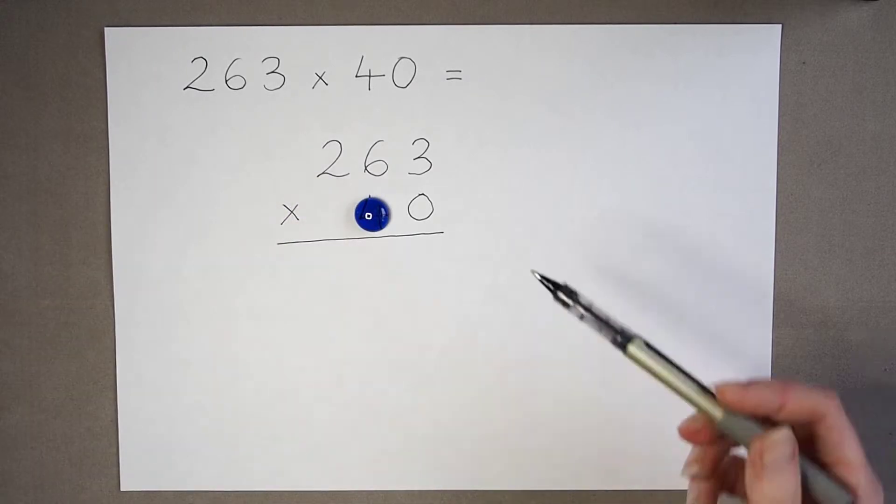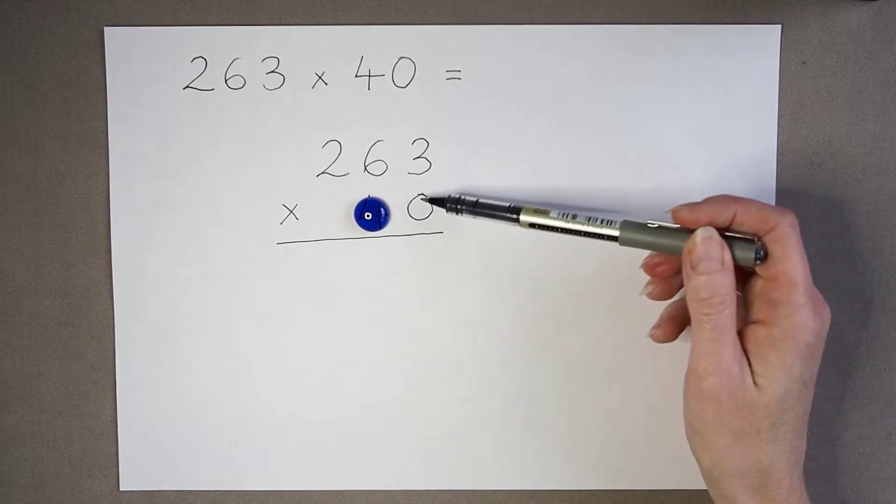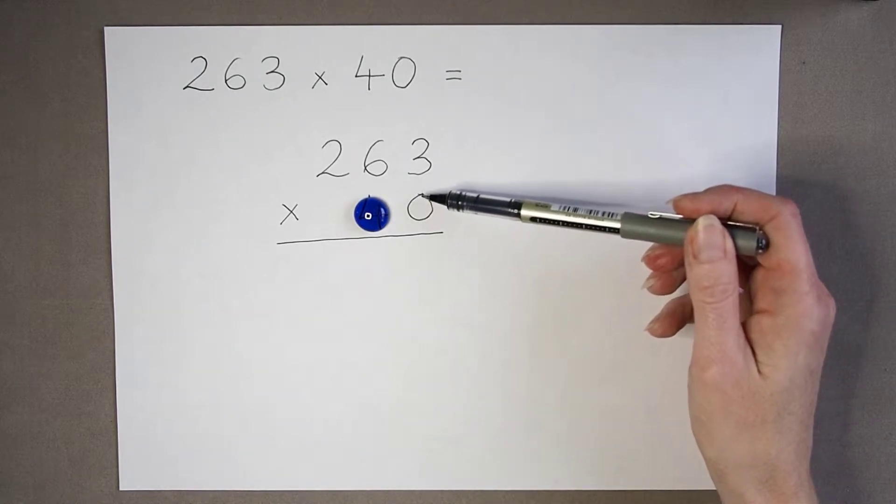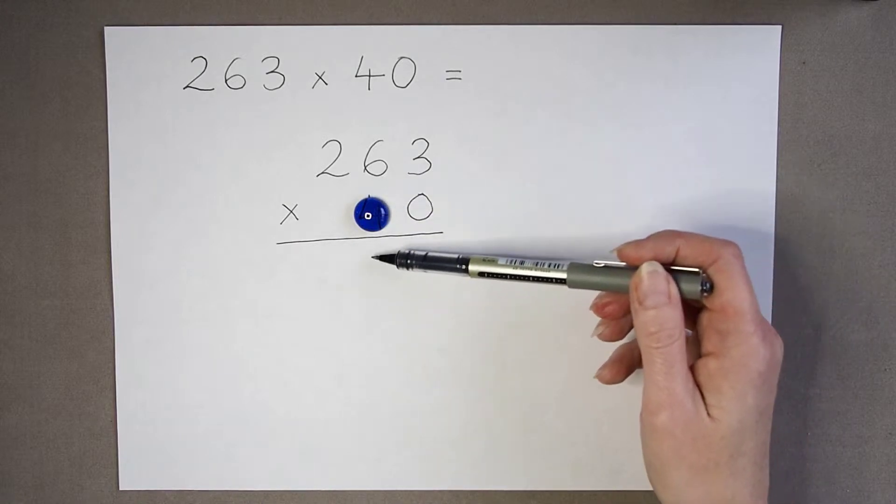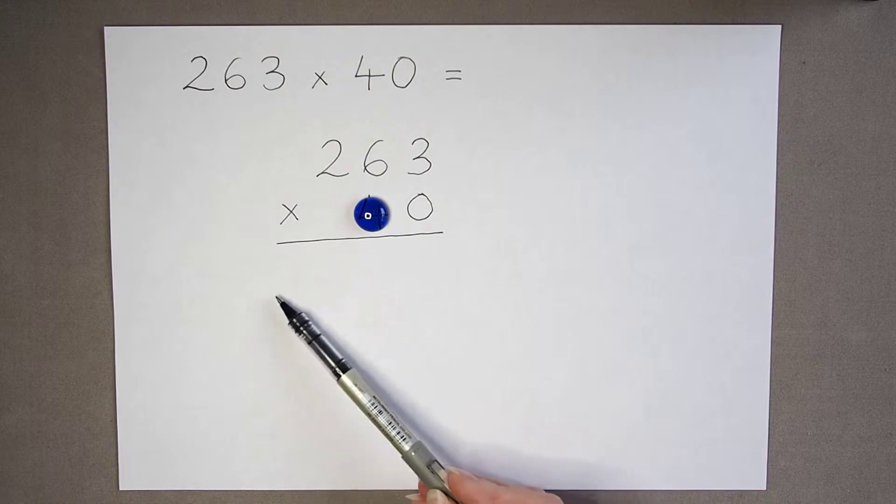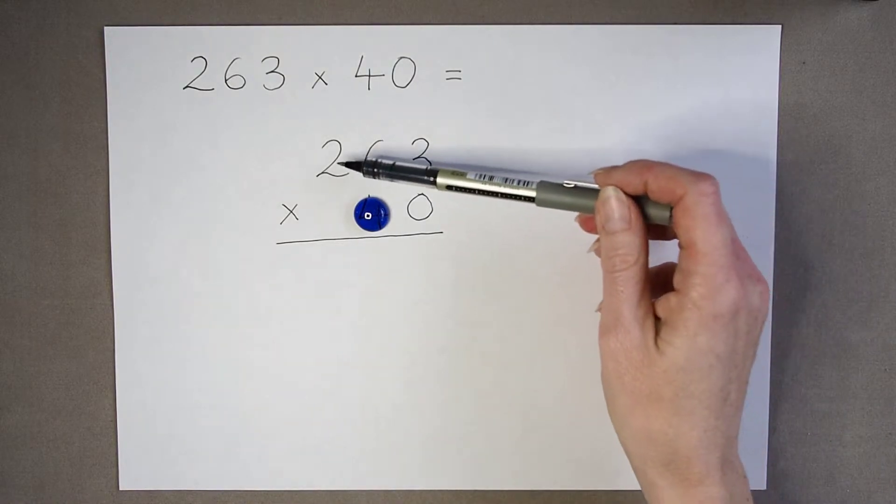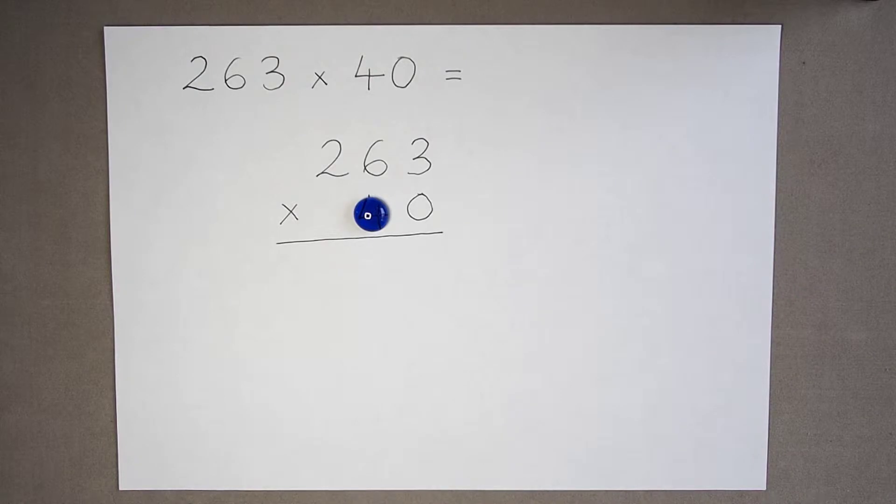So if I cover up the tens digit, I could go along and work this out and write it down. But what would happen? 0 times 3 is 0, 0 times 6 would be 0, and 0 times 2 would be 0. So I'm just going to have a row of 0s because 263 multiplied by 0 is 0. We know if we multiply by 0, then we will have 0 as an answer.